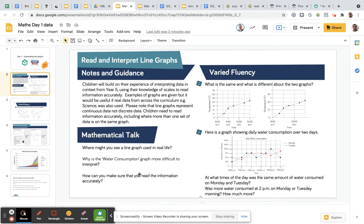Why is water consumption graph more difficult to interpret? So if we have a look here, the water consumption graph is down here. Why is this more difficult to interpret? Interpret means to read, to understand. Why is this more difficult? And then how can you make sure that you read the information accurately? So we're going to go through some points here.